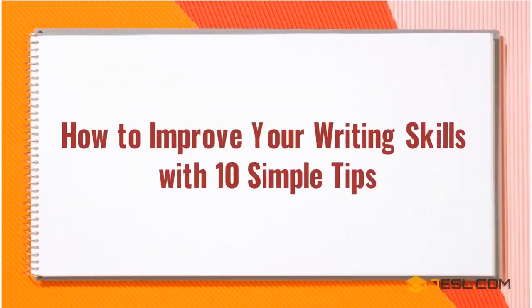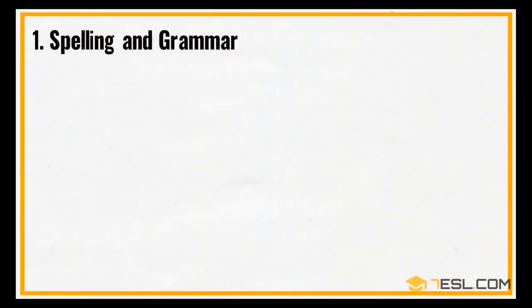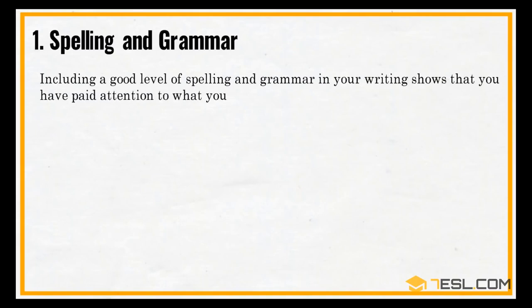How to improve your writing skills with 10 simple tips. Spelling and grammar. Including a good level of spelling and grammar in your writing shows that you have paid attention to what you are doing.